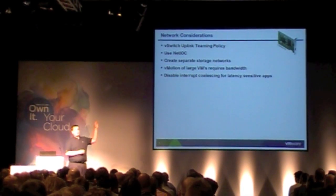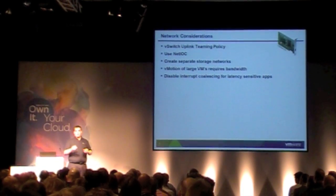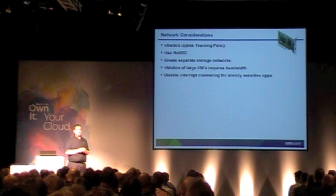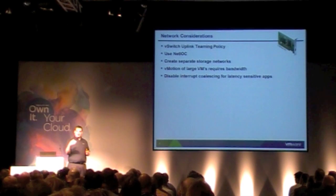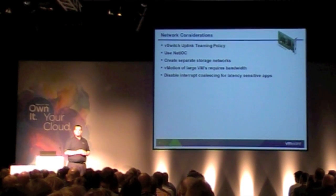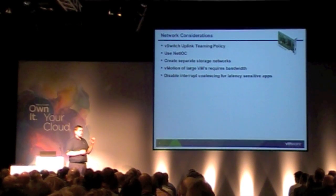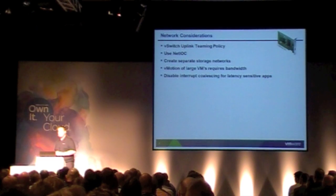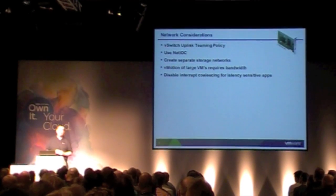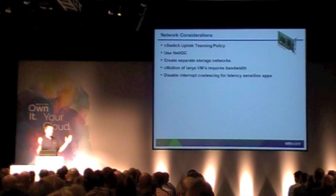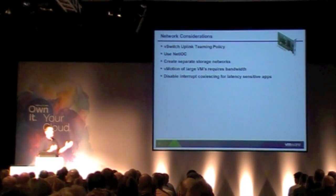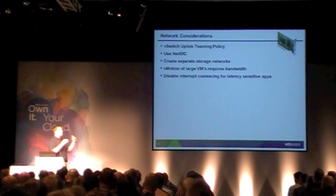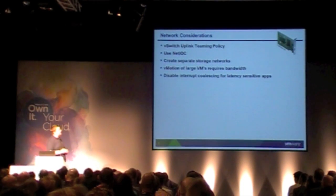Network IO Control is going to help you sort that out. If you have many uplinks, I still tend to break those out because we don't want to overrun the storage networks. If we take the VMs offline, it doesn't matter how anything performs, so be careful in balancing that.